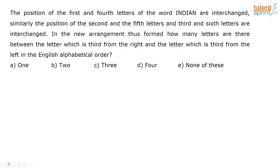The position of the first and fourth letters of the word INDIAN are interchanged. Similarly, the position of the second and the fifth letters, third and the sixth are interchanged. In the new arrangement thus formed, how many letters are there between the letter which is third from the right and the letter which is third from the left in the English alphabetical order. What is given here? There is a word Indian. And what are we doing?